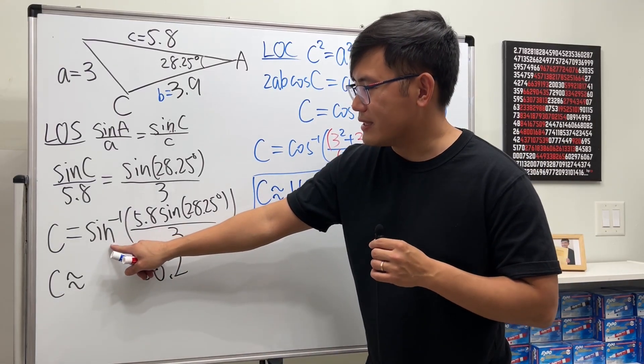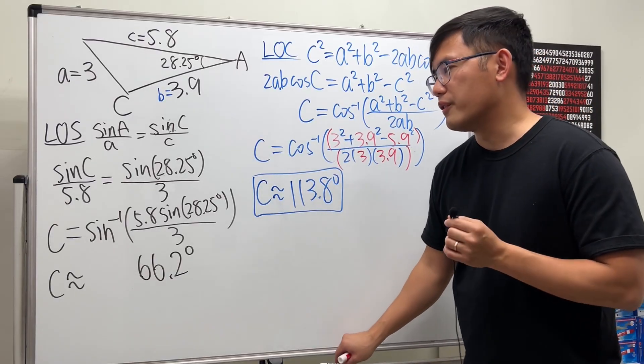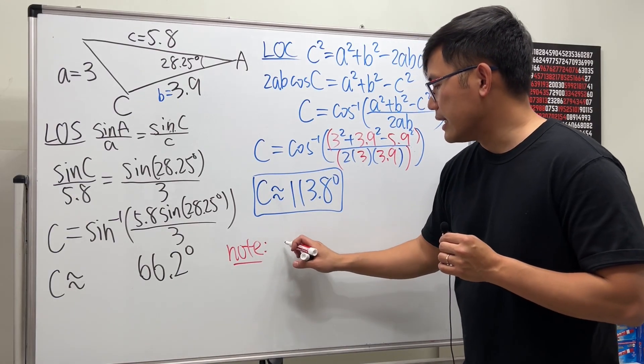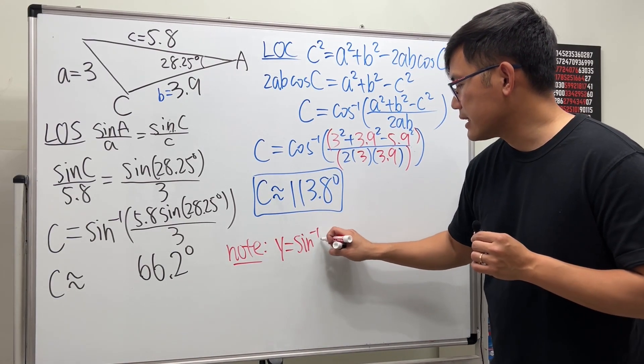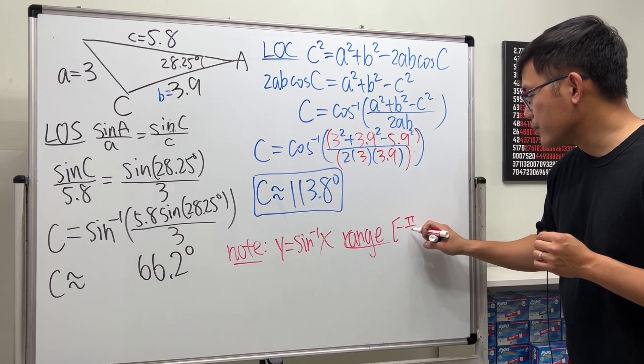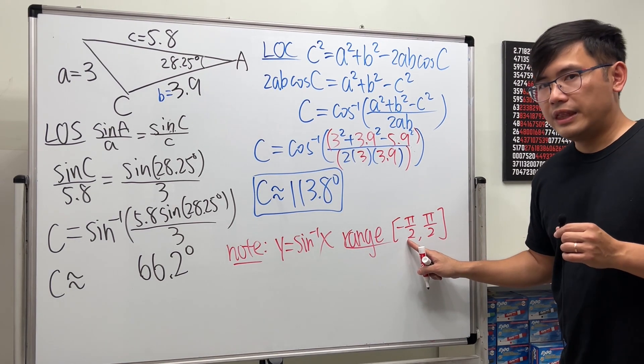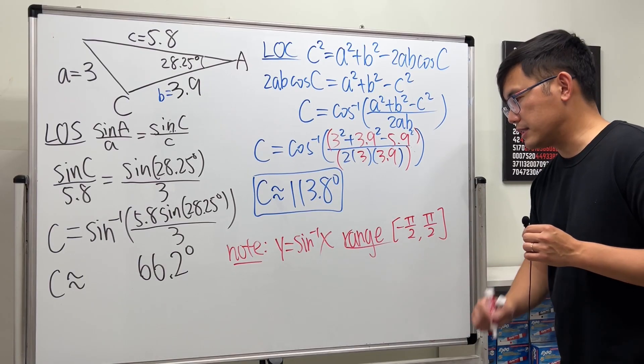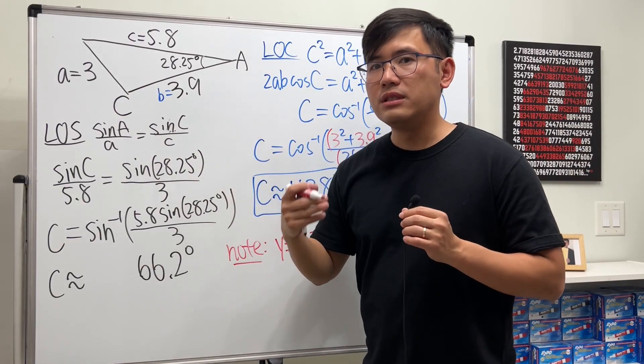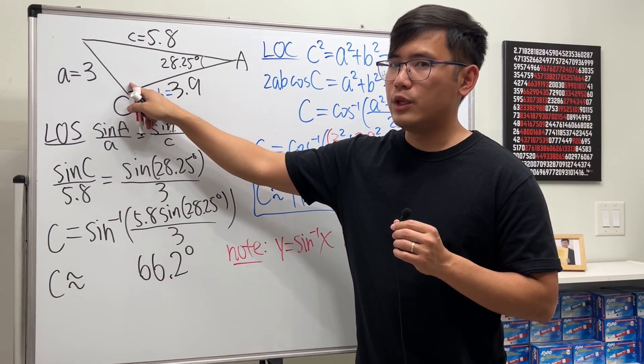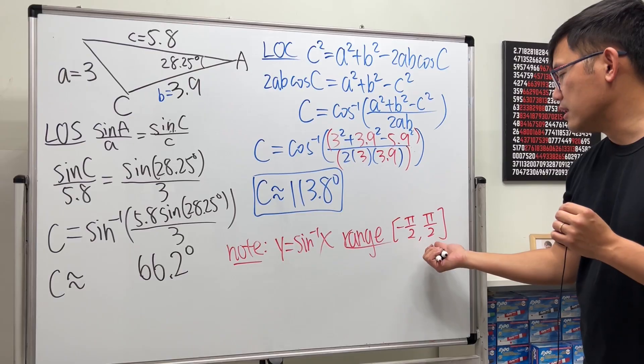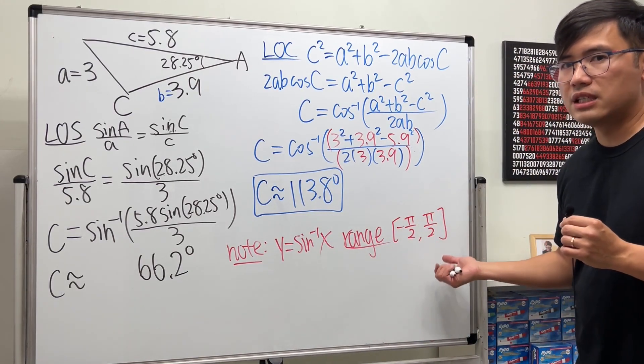Unfortunately, the inverse sine function has its limitation. And that is the range of the inverse sine function. Here is the deal. If we are looking at y equals inverse sine x, this right here, it has its range going from negative pi over 2 to positive pi over 2, namely negative 90 degrees to positive 90 degrees. So, if you are trying to figure out a missing angle by using the law of sine, if the angle is bigger than 90 degrees, unfortunately, the inverse sine will not give you the answer right away. Because the biggest answer that this function can give you is positive 90 degrees.